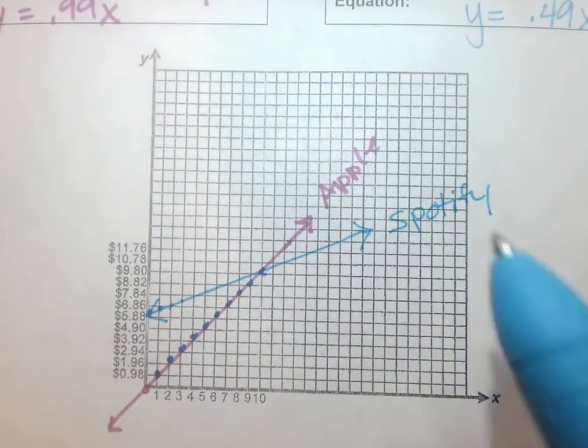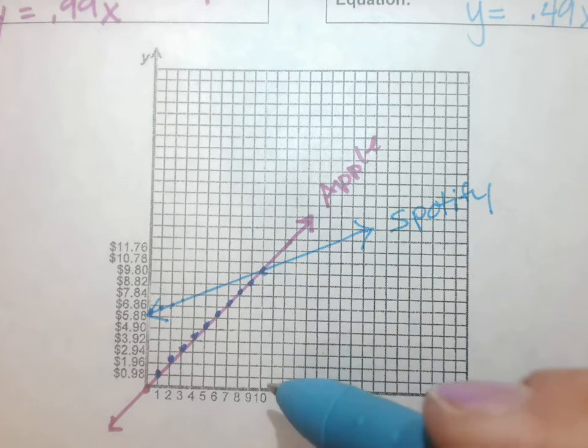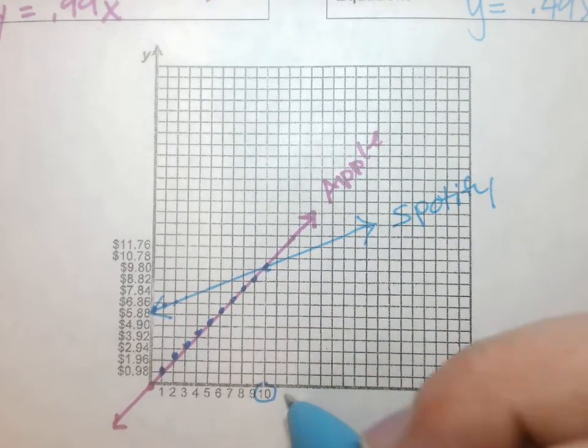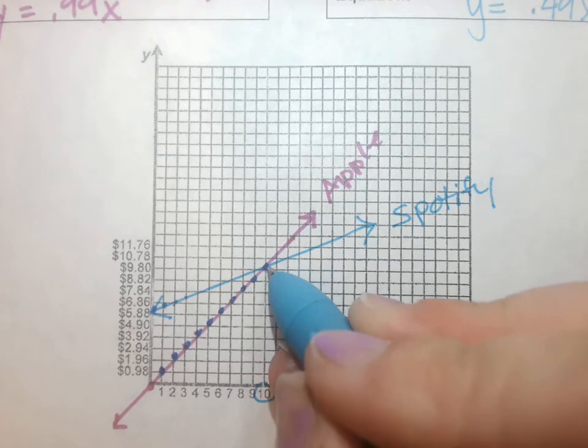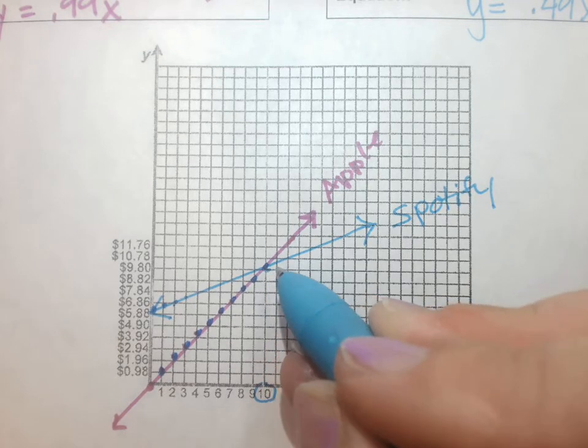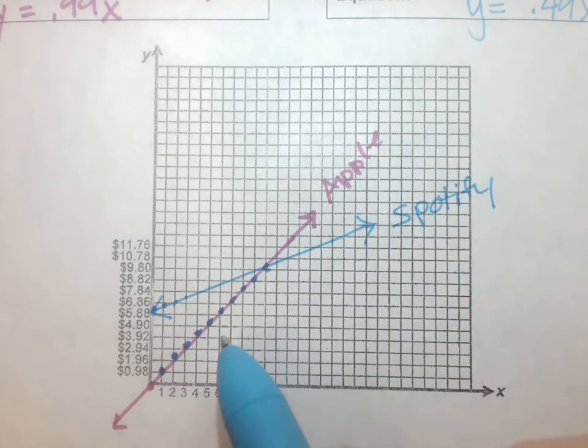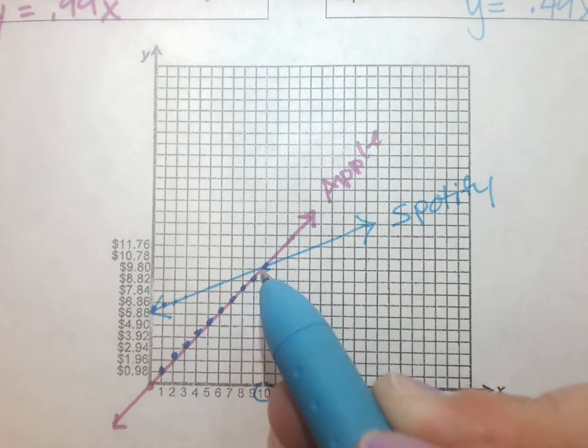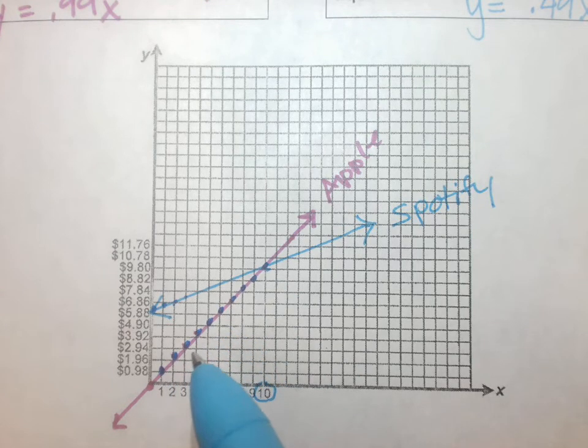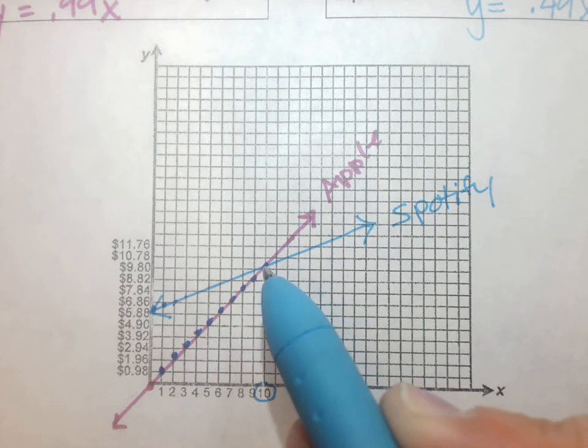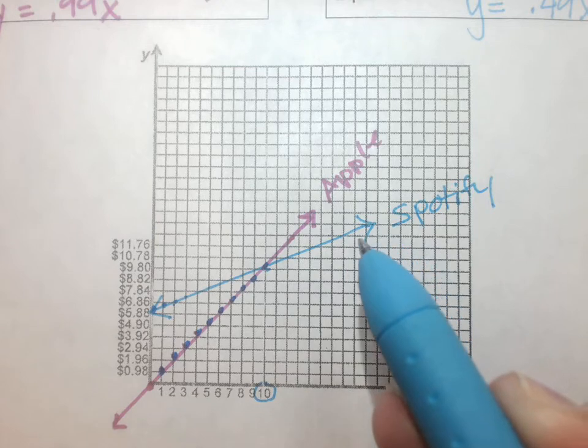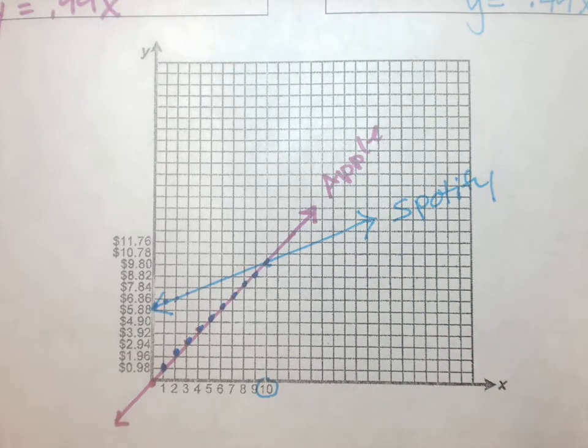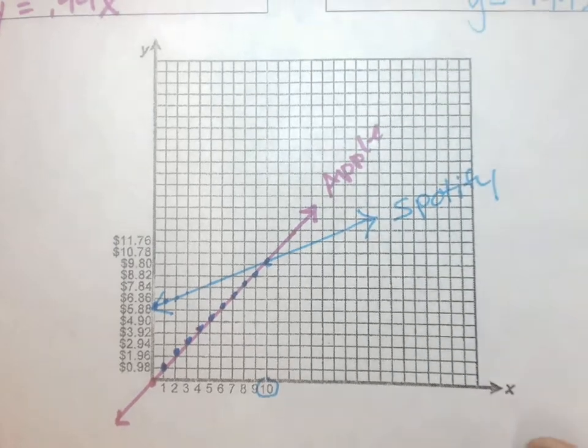So kind of what this means - you see how it goes down to 10 songs? So at 10 songs they cost the exact same. And what that means is, if you're the kind of person that only does 10 songs of downloading, you're going to choose Apple. But if you're the kind of person that does way more than 10 songs, you're going to choose Spotify. So this is all about what you use as a consumer and what's really best for you.